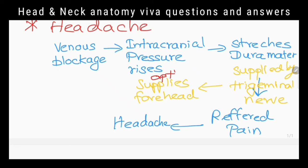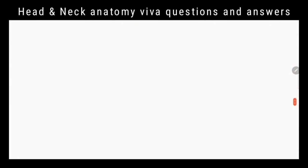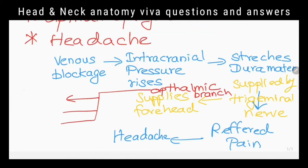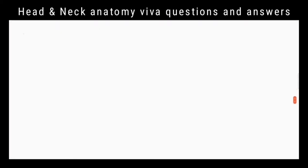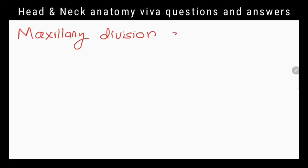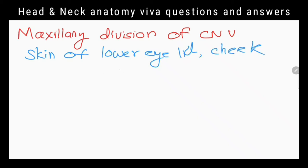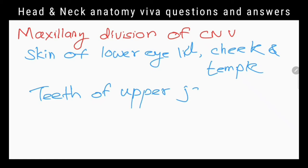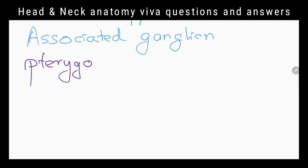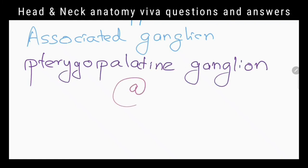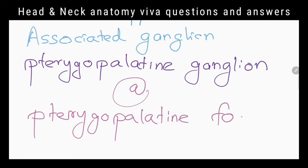Which branch of the trigeminal nerve is responsible for innervation of the skin of the forehead? The ophthalmic branch of the trigeminal nerve. What are its branches? Frontal nerve, lacrimal nerve, and nasociliary nerve. What is innervated by the maxillary division of the trigeminal nerve? Skin of the lower eyelid, cheek, and temple; teeth of the upper jaw and nasopharynx. What is the ganglion associated with the maxillary branch of the trigeminal nerve? The pterygopalatine ganglion, located at the pterygopalatine fossa.